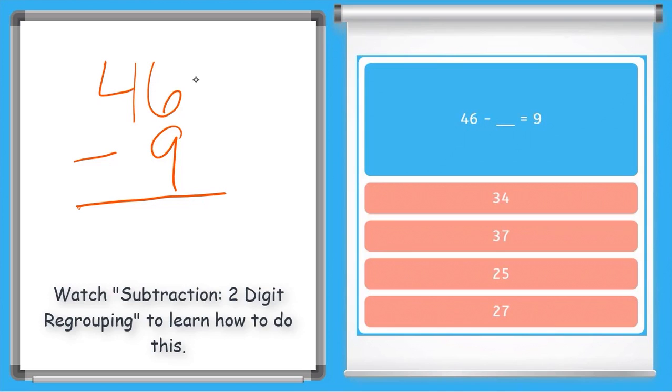So I cannot take 9 away from 6 because 9 is bigger. So I will have to borrow from the tens place. Take 1 ten away, that means I have 3 tens. Add that 10 to the 6 makes 16. So 16 minus 9 is 7. Now 3 minus nothing is 3. Look over here. Here's our answer. 37.